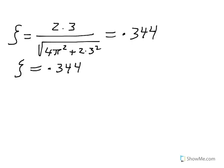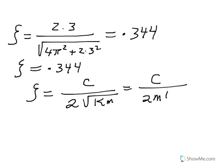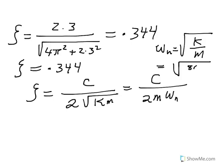So now, going back to the definition of zeta, zeta is equal to C divided by 2 square root of Km. This could be also written as C divided by 2m omega n. And by the way, omega n is the square root of Km, which is the square root of 80,000 divided by 200, and that becomes 400, so therefore your omega n is going to be 20 radians per second.